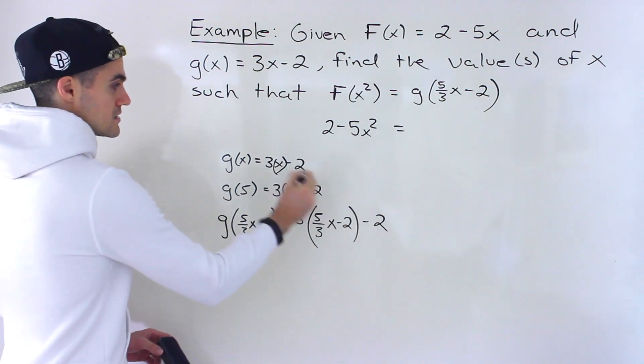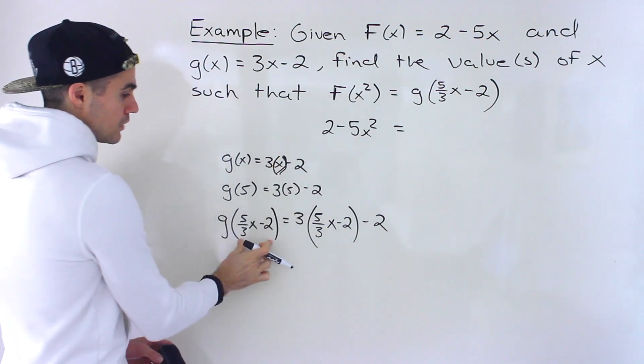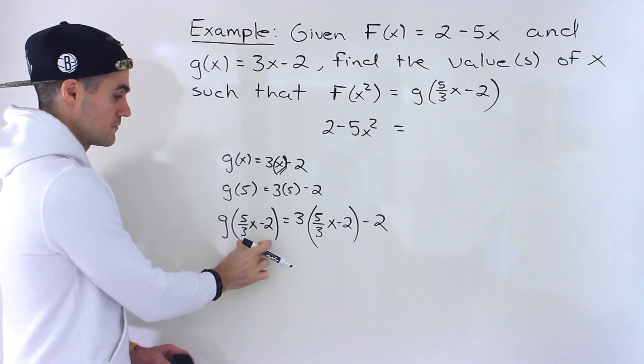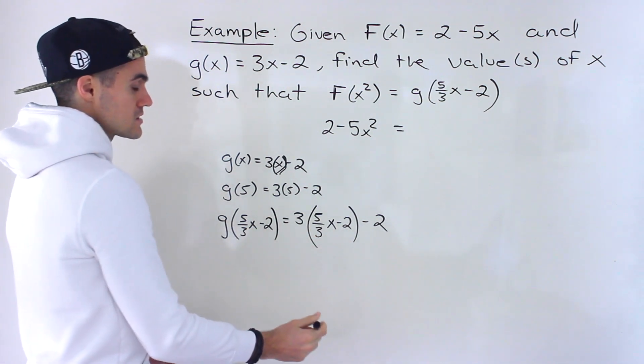Right, this minus 2 is this minus 2. And then for this x value for this bracket over here, we plugged in that entire expression: 5 over 3x minus 2.